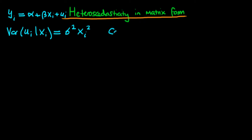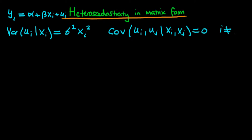We're still going to assume that we have no autocorrelation or no serial correlation, which means that the covariance of ui with uj given xi and xj is equal to zero when i does not equal j.